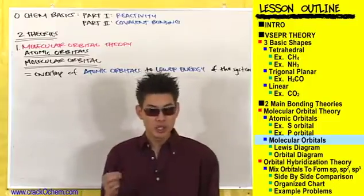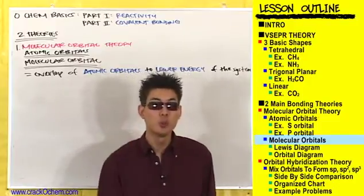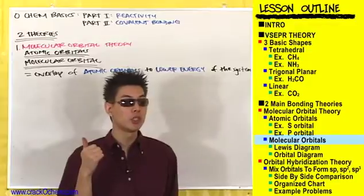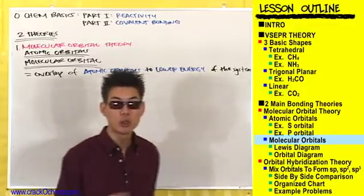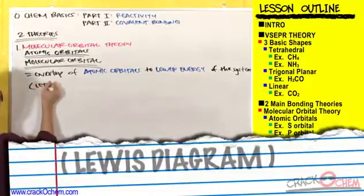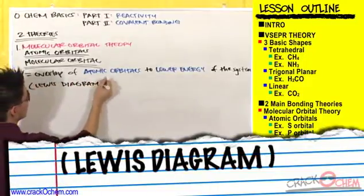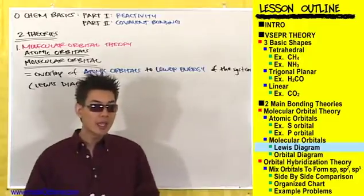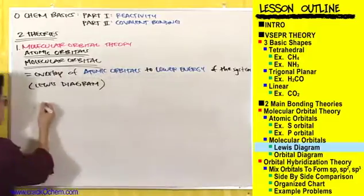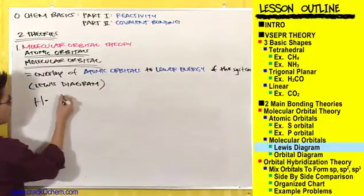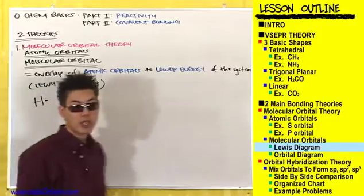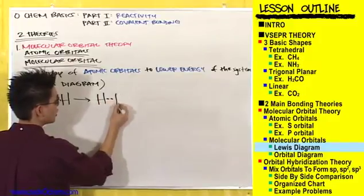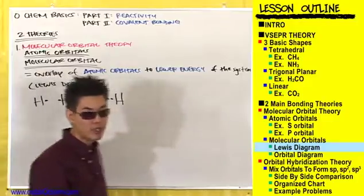Let's use H2 as an example. I'm going to show this two ways: using a Lewis structure diagram and using a molecular orbital diagram. We're combining two atoms of hydrogen to make a molecule of hydrogen — each with one valence electron — and these combine to make a molecule of hydrogen with the valence electrons now being shared between the two hydrogens.